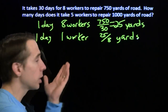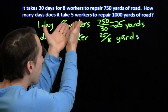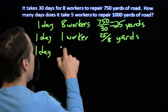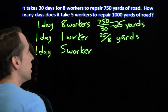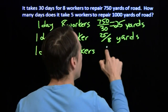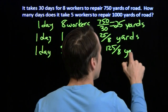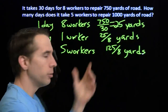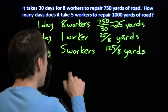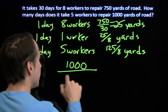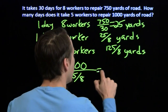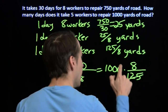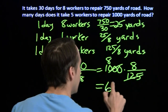So we know how much work each worker does each day. Now let's bring it back to the new situation: five workers. If each worker does 25 over 8 yards per day, then five workers — we just multiply — each one is doing 25 over 8, so five of them get 125 over 8 yards per day. But I need 1,000 yards. If I need 1,000 yards of road and I can only build 125 over 8 yards each day, then the total number of days I need is 1,000 divided by 125 over 8, which is the same as 1,000 times 8 over 125. 125 goes into 1,000 eight times, and we get 64 days.